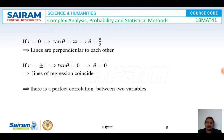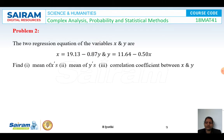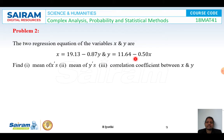Next problem: The two regression equations of variables x and y are given by x equals 19.13 minus 0.87y and y equals 11.64 minus 0.50x. Find the means of x and y, and the correlation coefficient between x and y.